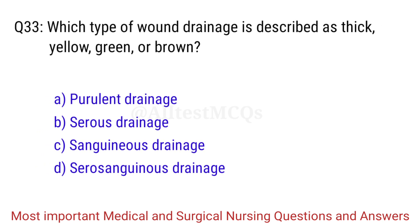Q33. Which type of wound drainage is described as thick, yellow, green, or brown? The right answer is Option A: Purulent drainage.